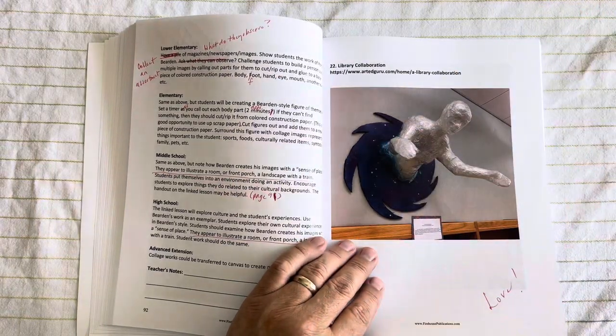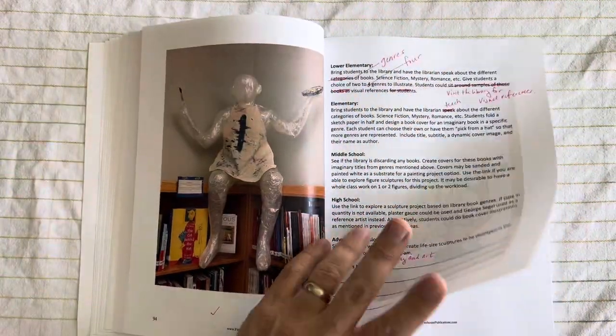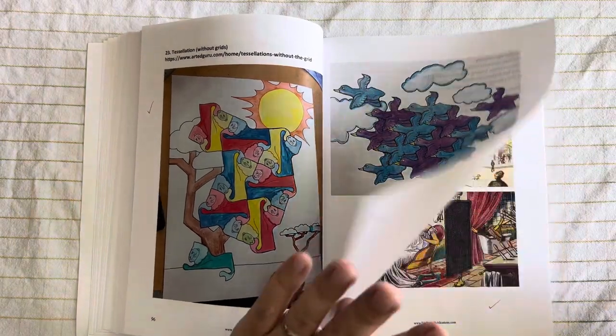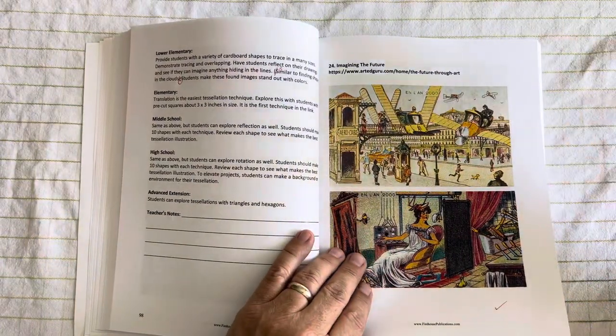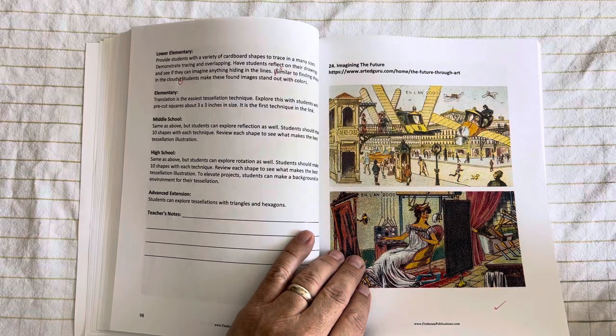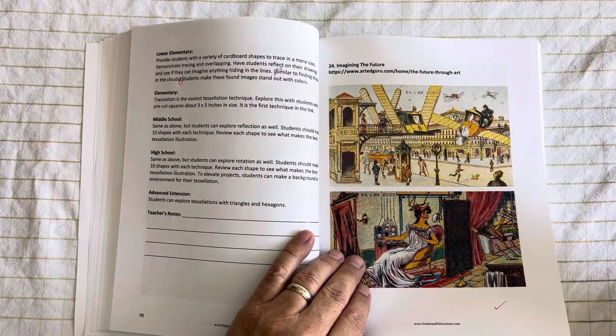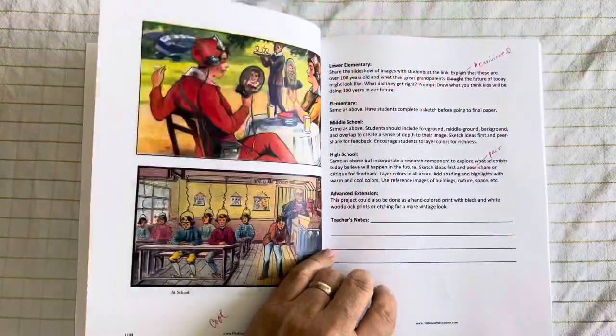Here's a sculpture lesson that ties in with the library, which is a lot of fun. Tessellations that are done without a grid. Imagining the future. We found some prints done of what people thought the year 2000 would look like back in the 1800s.